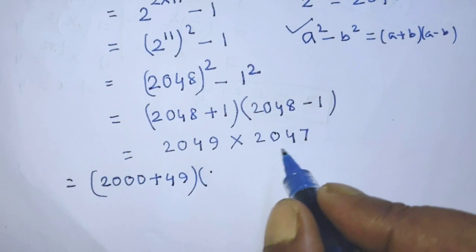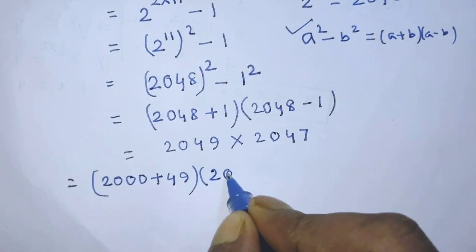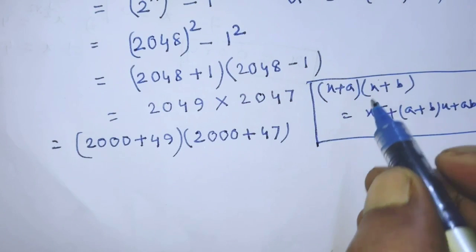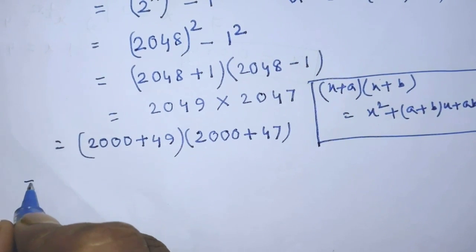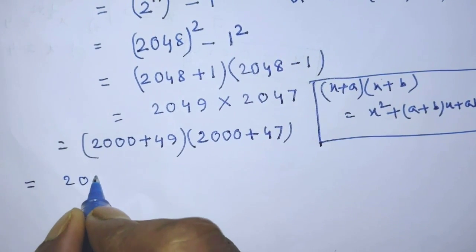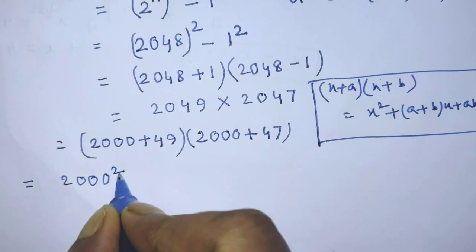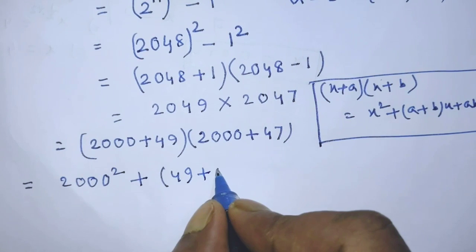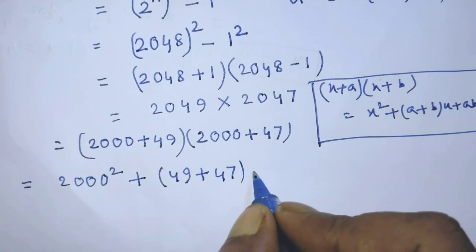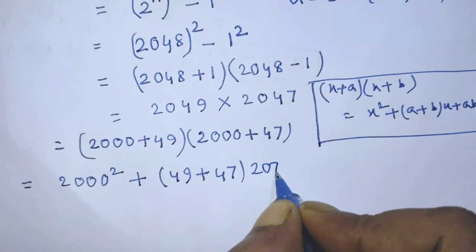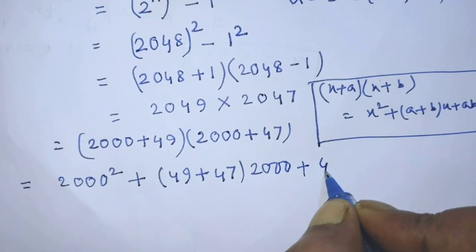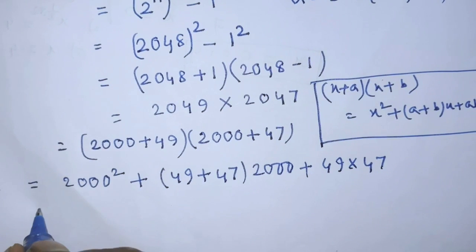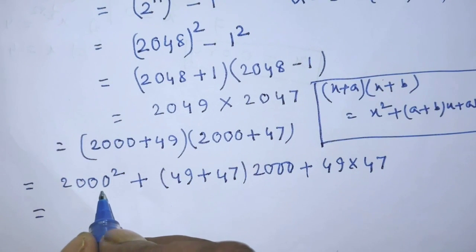In the place of 2049 we can write 2000 plus 49, and similarly 2047 becomes 2000 plus 47. Applying the expansion formula, it will be 2000 whole to the power 2, plus 49 plus 47 times 2000, plus 49 times 47.